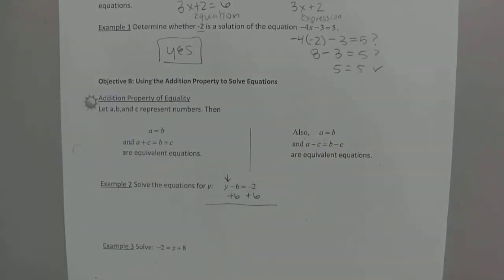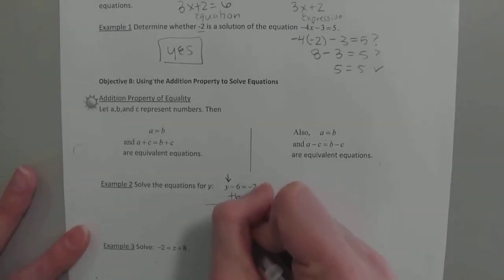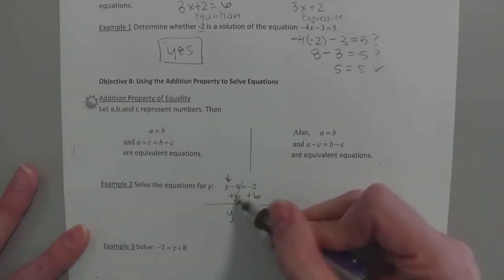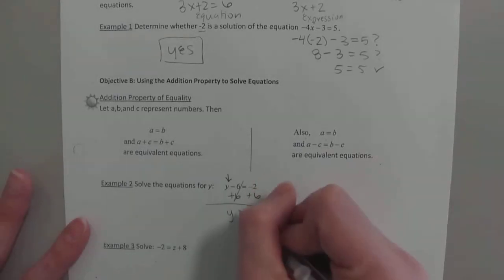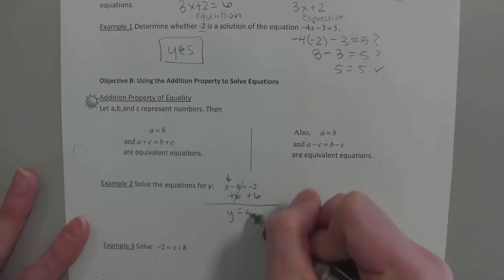Did we do anything with y? No. So who's still there? Y. But what's negative 6 plus 6? 0. And you can put 0 there, but we don't want to clutter it up if we don't have to. And then what's negative 2 plus 6? 4, right?